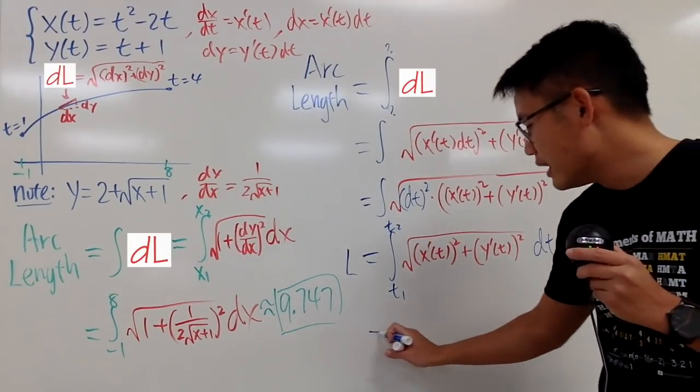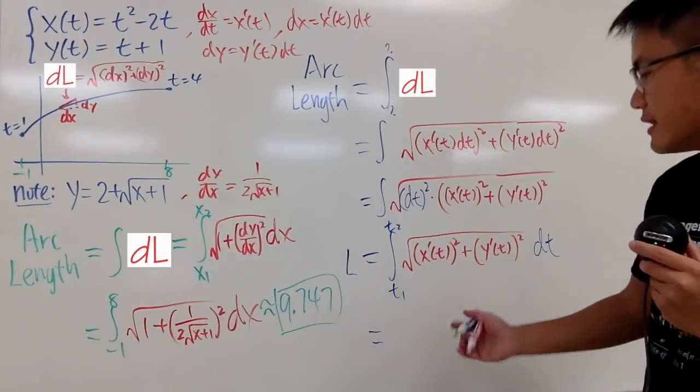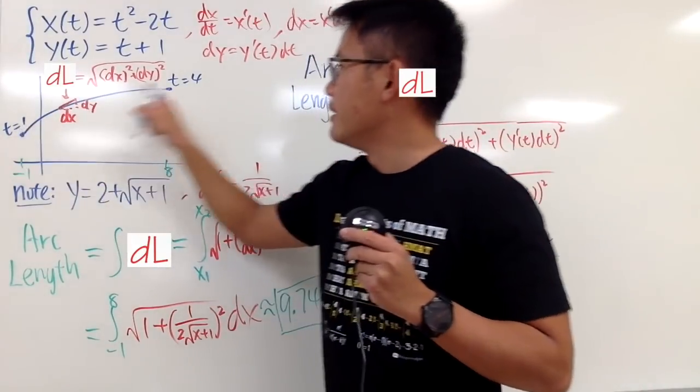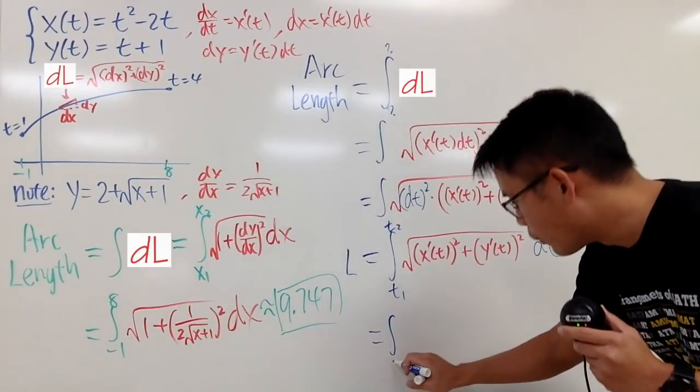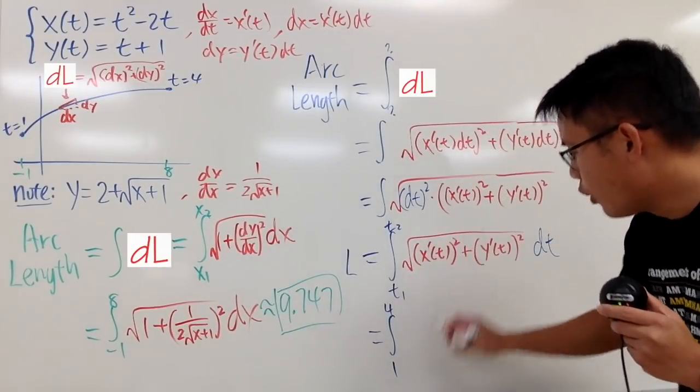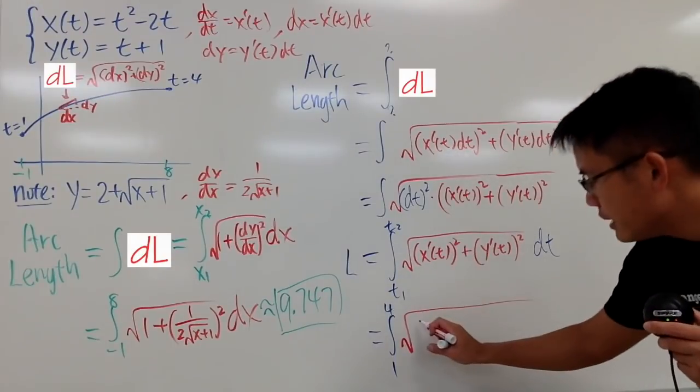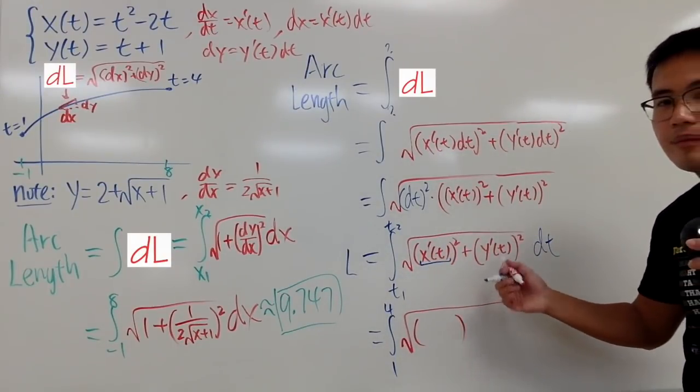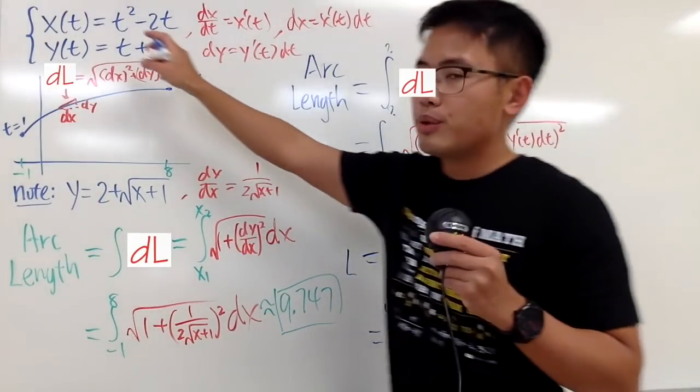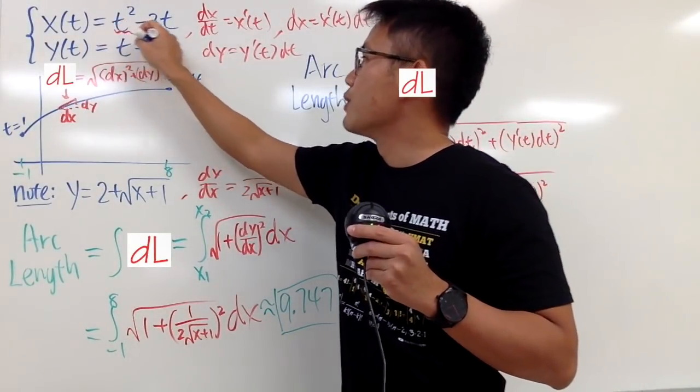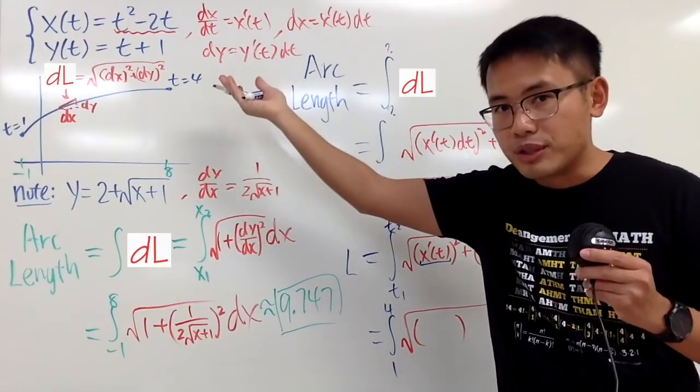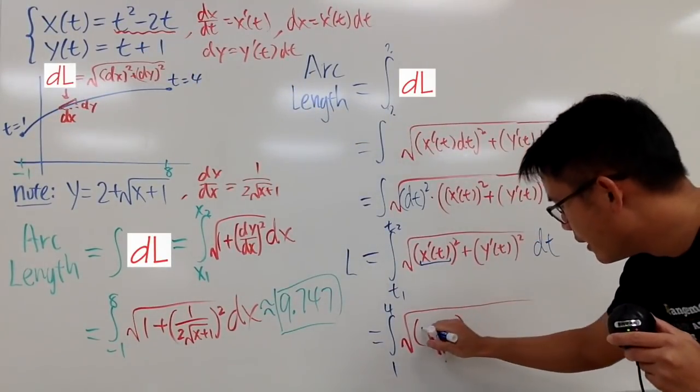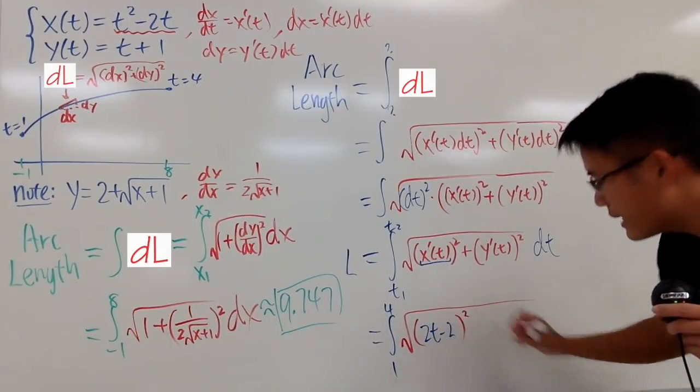Let me just show you guys, in our situation, the setup will be the integral t1 is 1 and t2 is 4. So you can just put down from 1 to 4. And then you open your square root, parentheses, and now let's see what's x'(t). For this, you look back to the x equation, and then you are just going to differentiate that with respect to t, and you get 2t - 2. And that goes right here: 2t - 2, and then you square that.